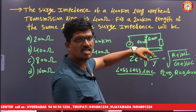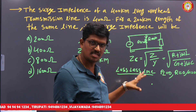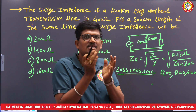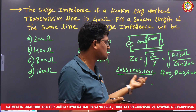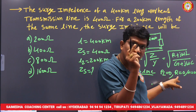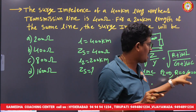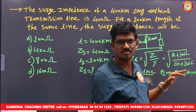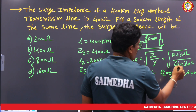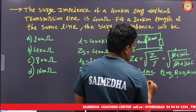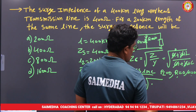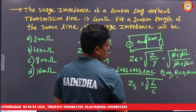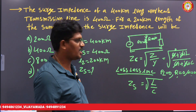If G is zero, insulation resistance is infinity, meaning there is no leakage current. That is why G is taken as zero — this is the ideal condition. So line resistance R is zero and conductance G is zero, making both those values zero. The jω terms cancel, leaving √(L/C), which is the surge impedance formula.